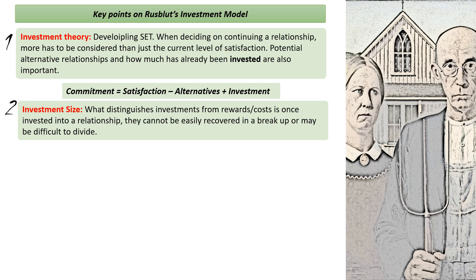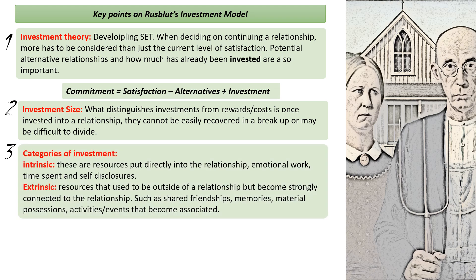It might be helpful to break investment down into two categories. We have intrinsic investments — these are things that you as an individual have put directly into the relationship as you've been trying to make it work, so you've been investing emotionally. You've spent time with this person trying to develop a relationship, and you've also self-disclosed to them. When you leave, you're never going to get that time back that you spent investing in the relationship, and you're not going to be able to take those self-disclosures back either.